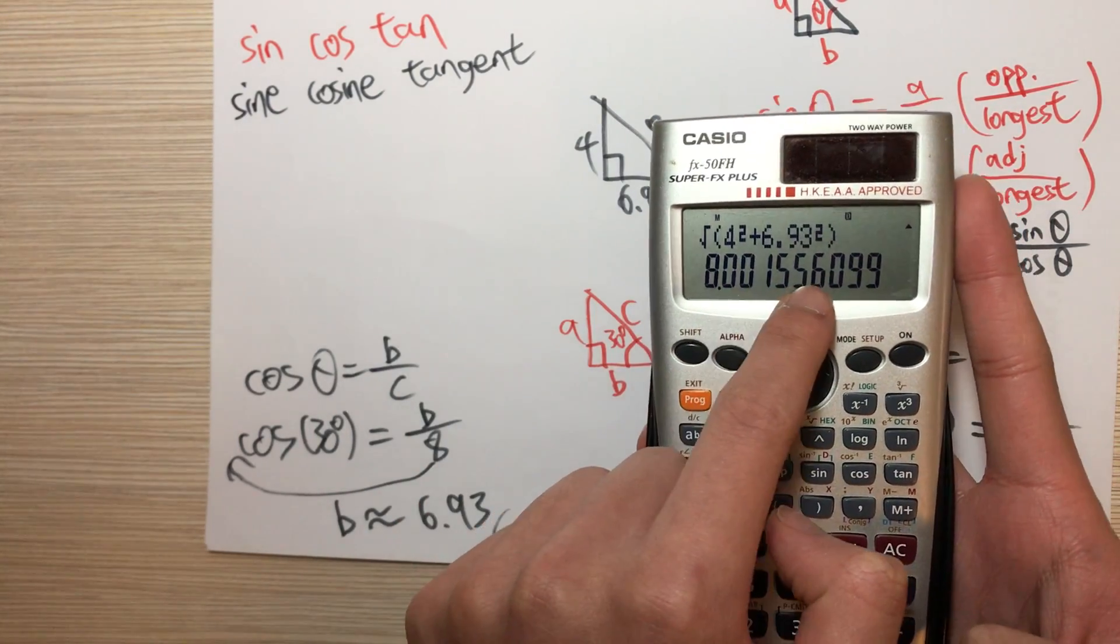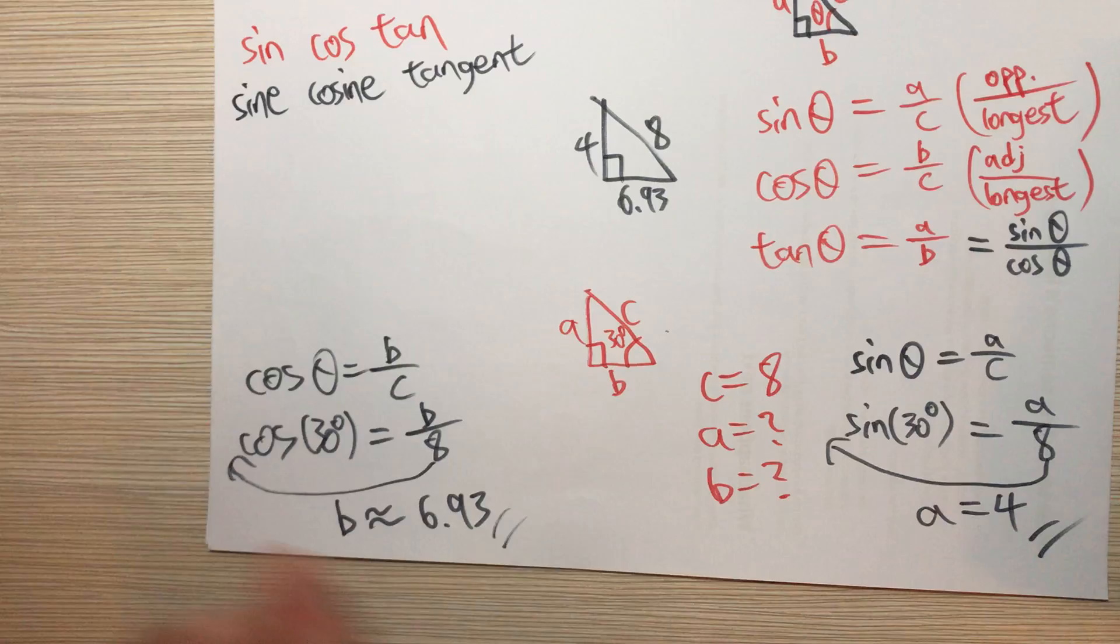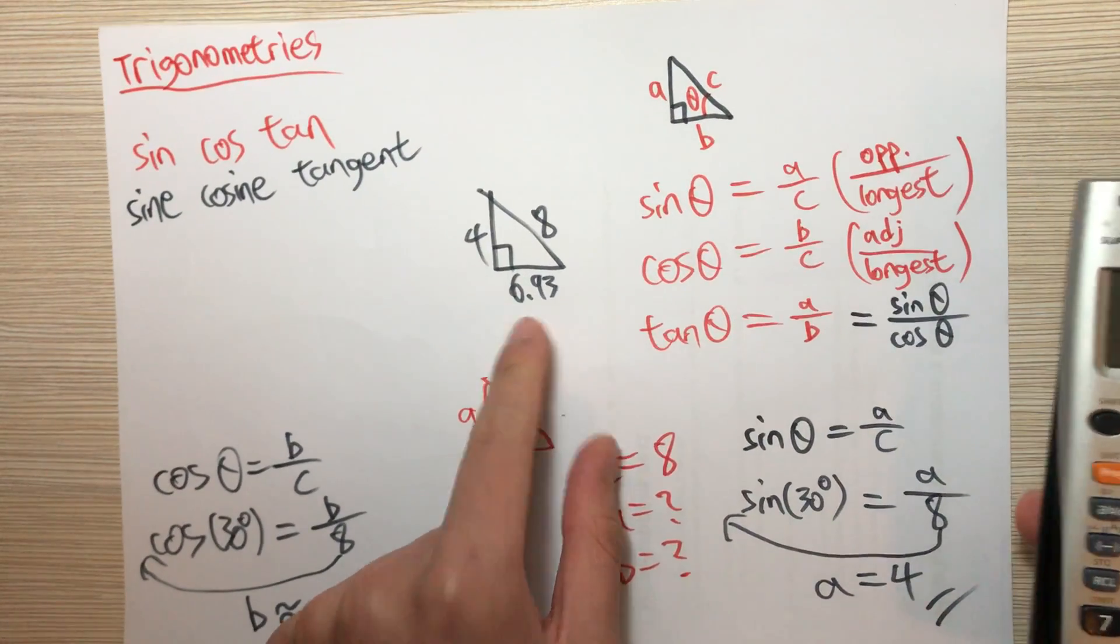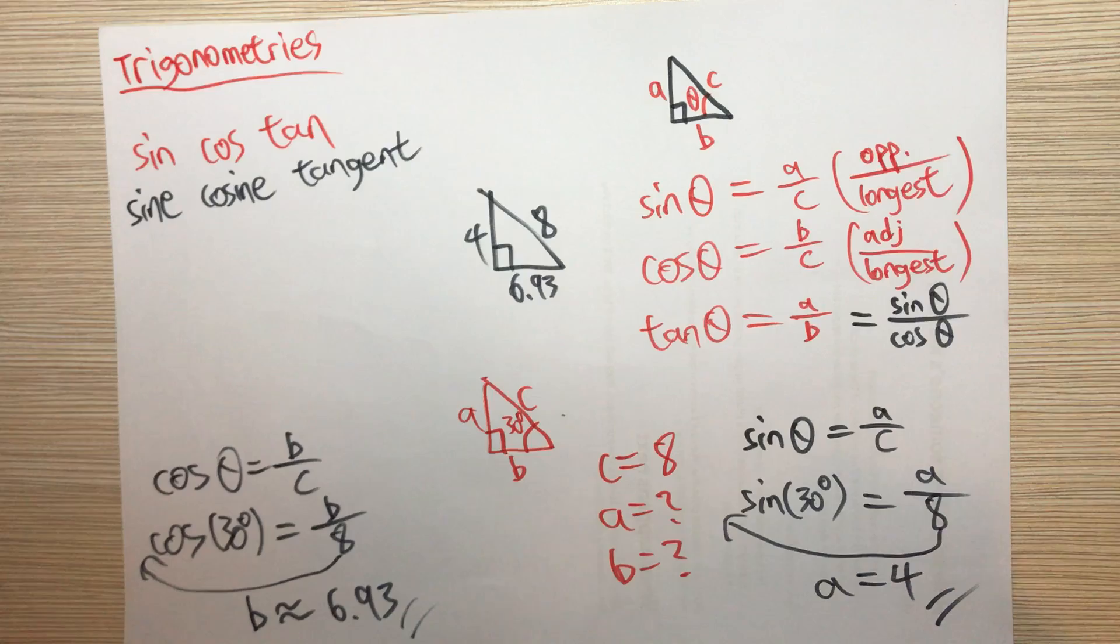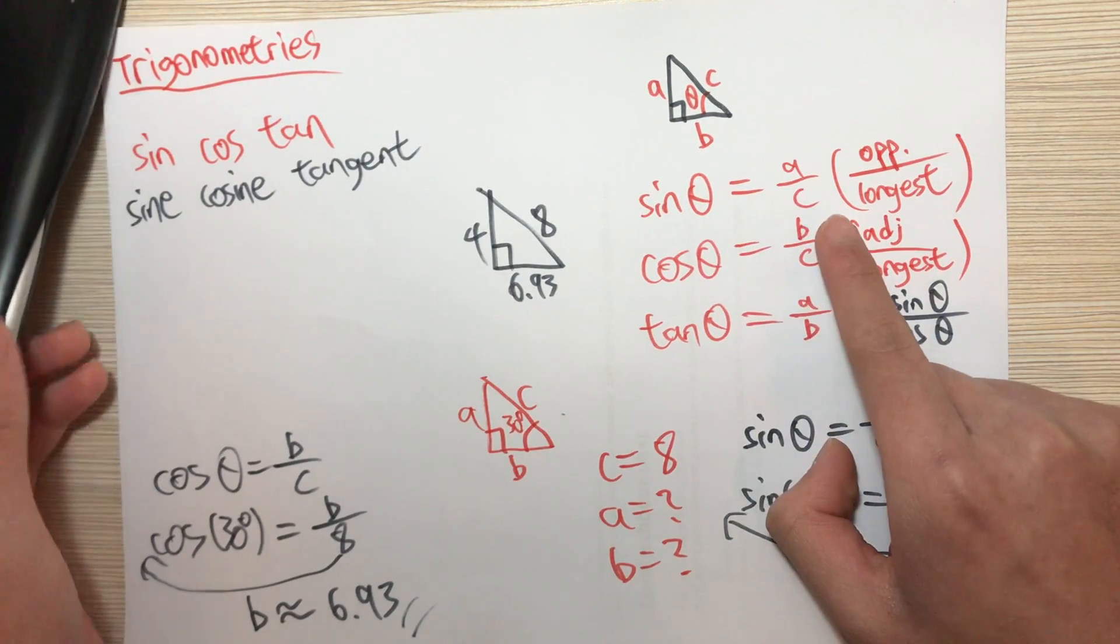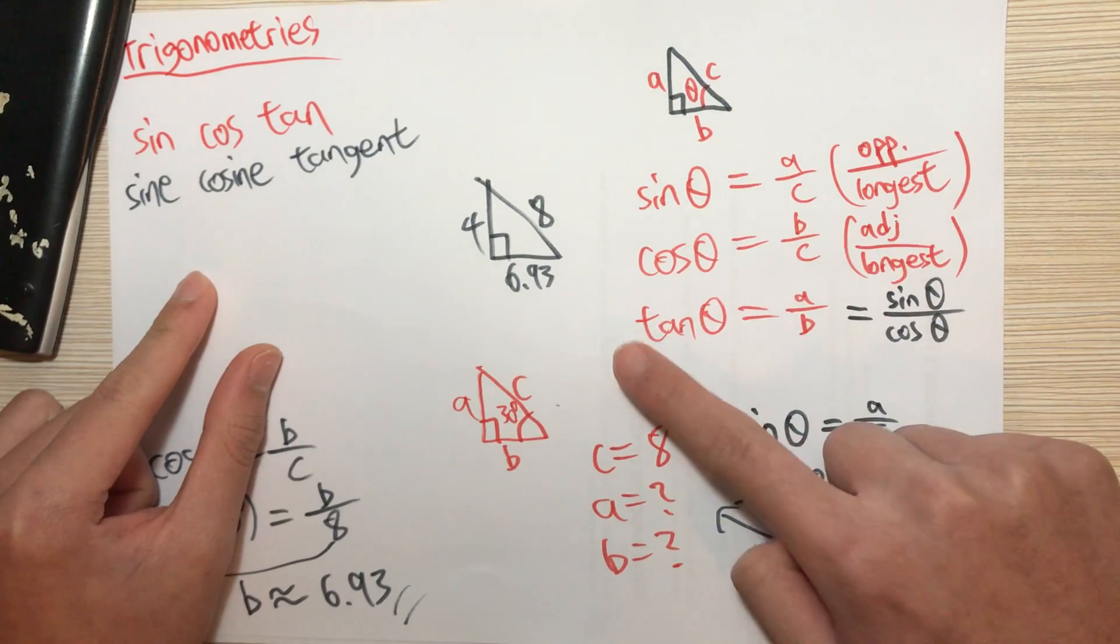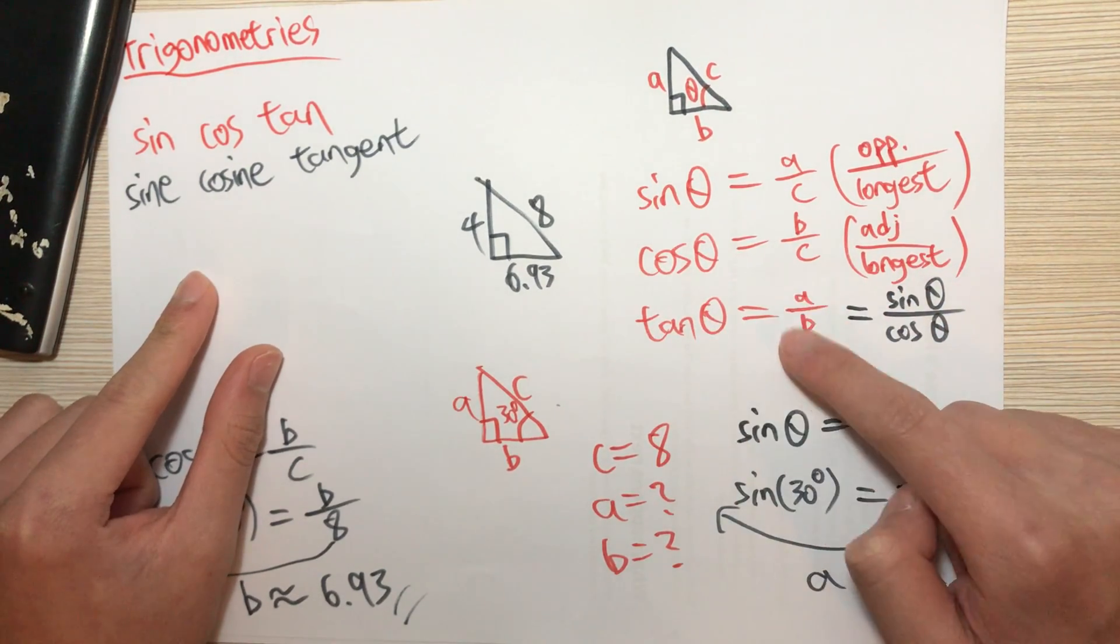Yes, it is very close to 8. So this means this set of results is right. And that is the end of today's video. Remember: sine theta is A over C, cosine theta is B over C, and tangent theta is A over B.